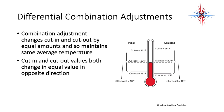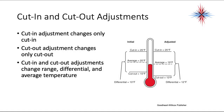Combination adjustment changes cut in and cut out by equal amounts, so it maintains the same average temperature. For example, initial values cut in at 25 degrees and cut out at 15 degrees give an average temperature of 20 degrees with a 10-degree differential. After adjustment, the cut in is 26 degrees and cut out is 14 degrees — the average temperature remains 20, but the differential is now 12. The equipment will start and stop less often, but there will be a much wider swing in temperature.